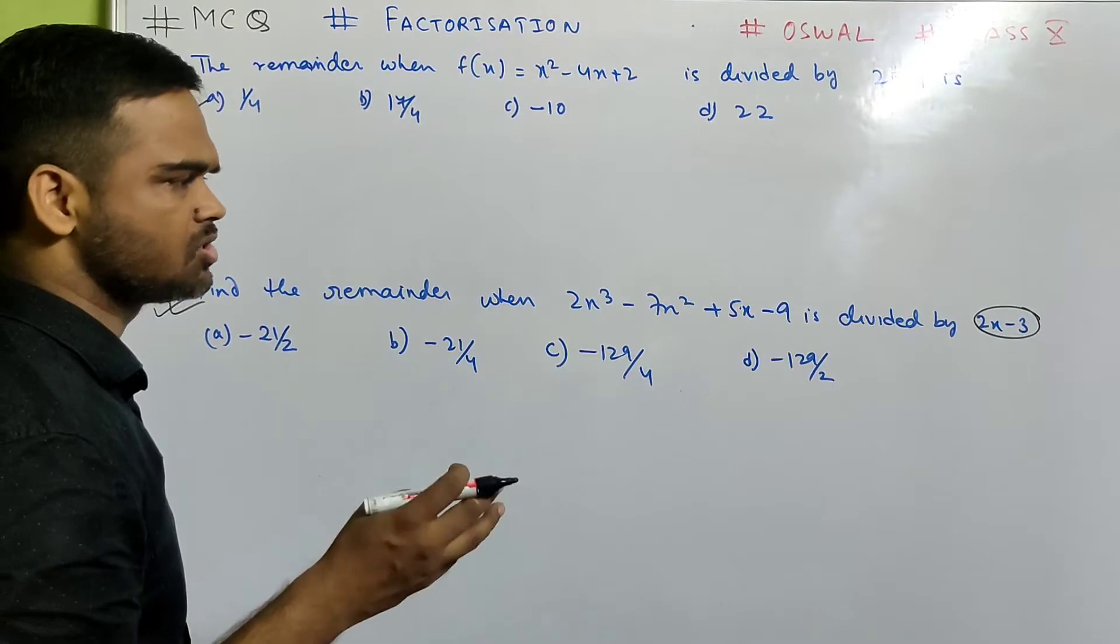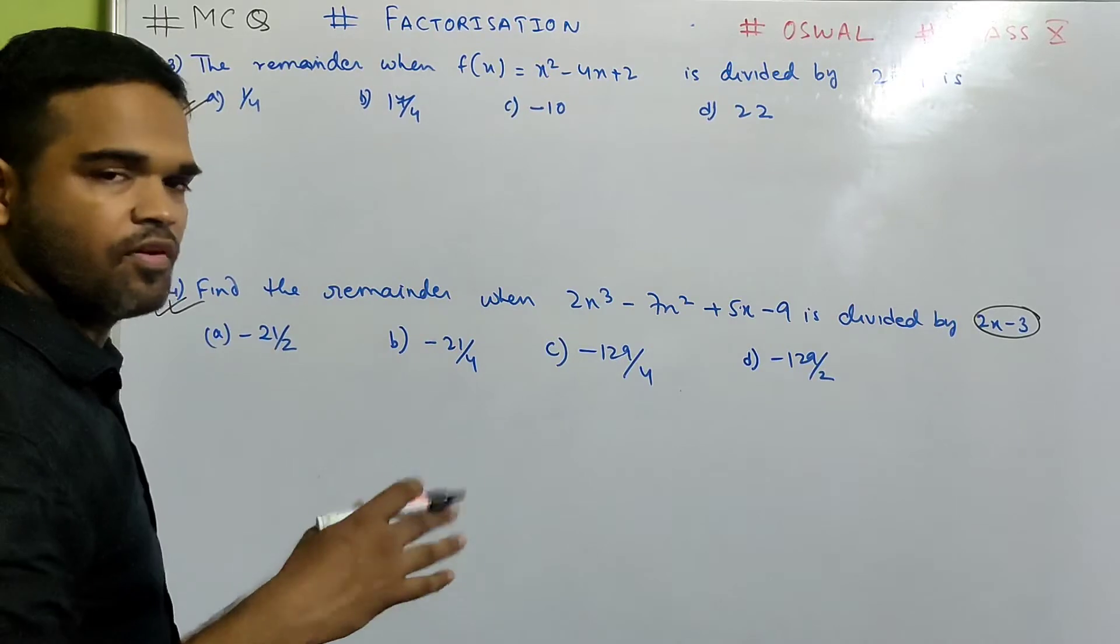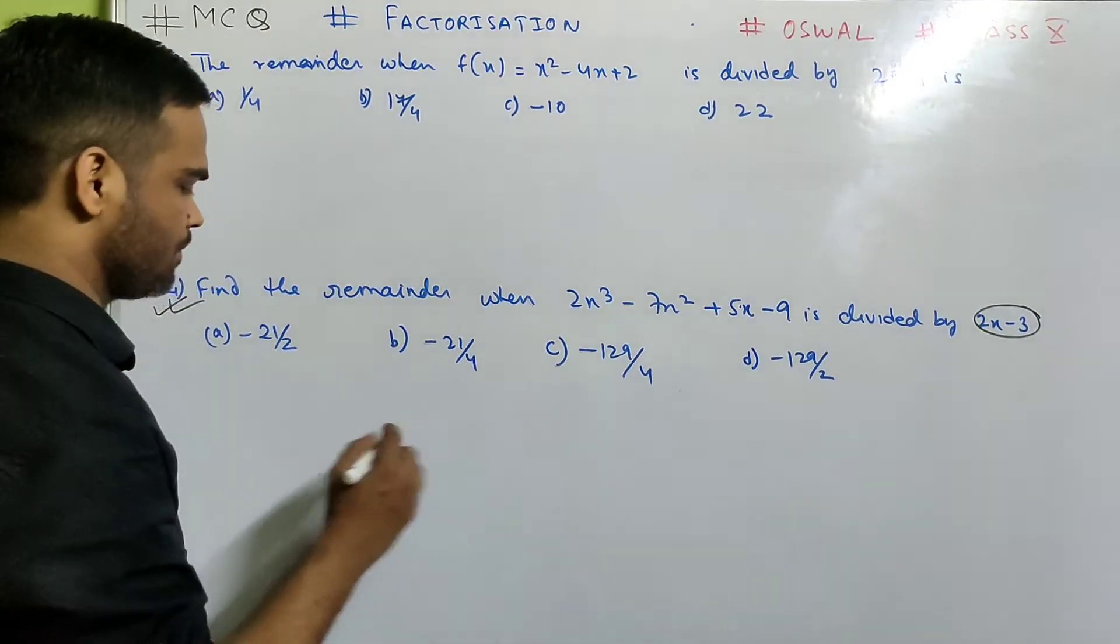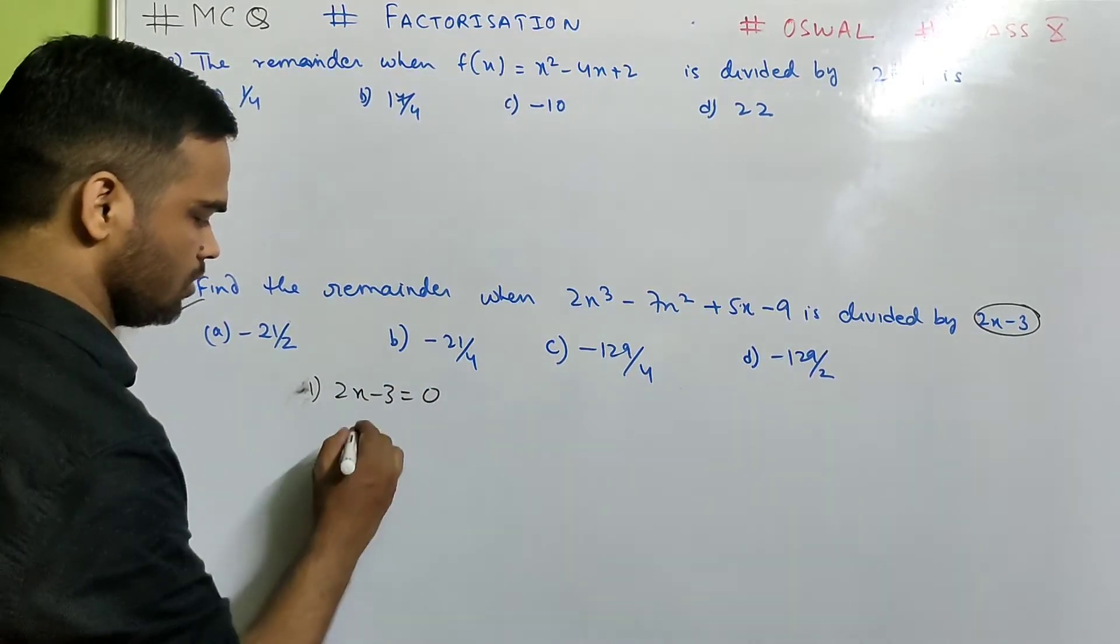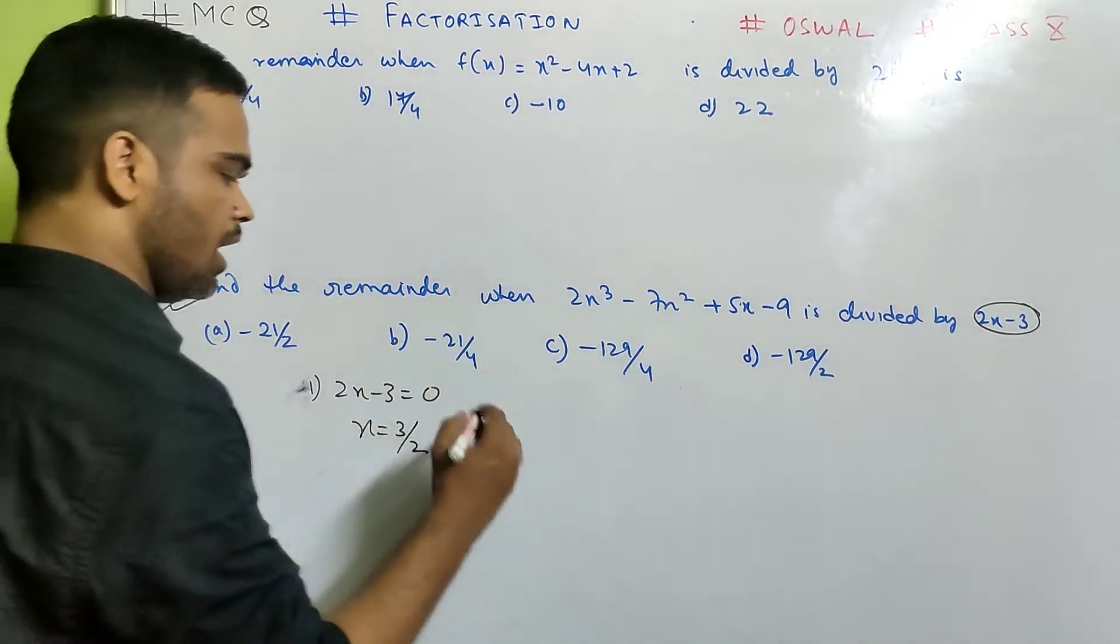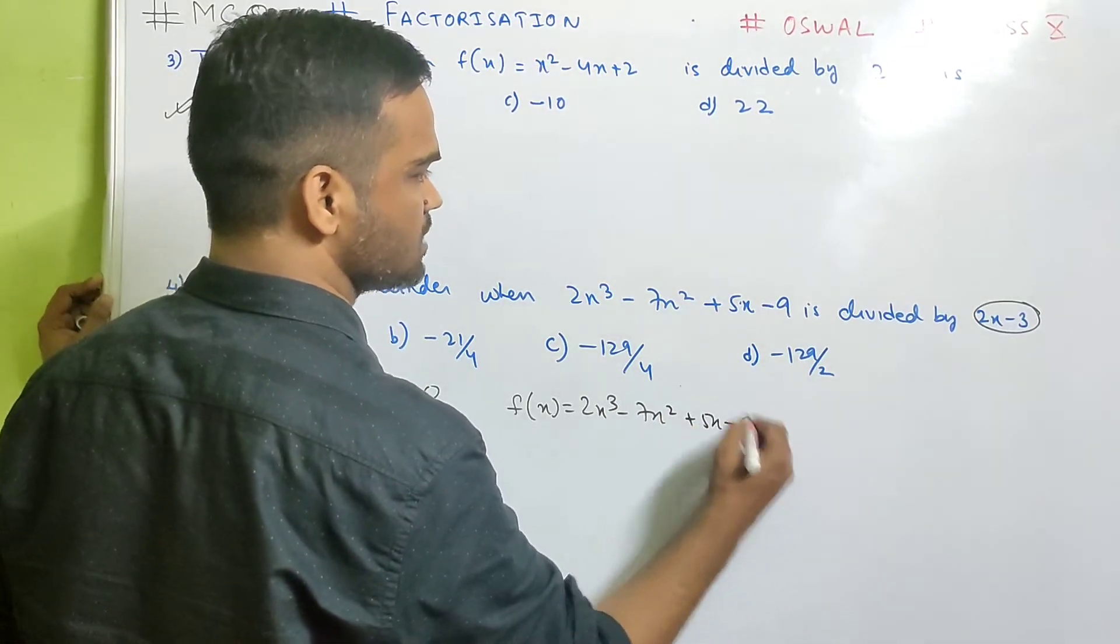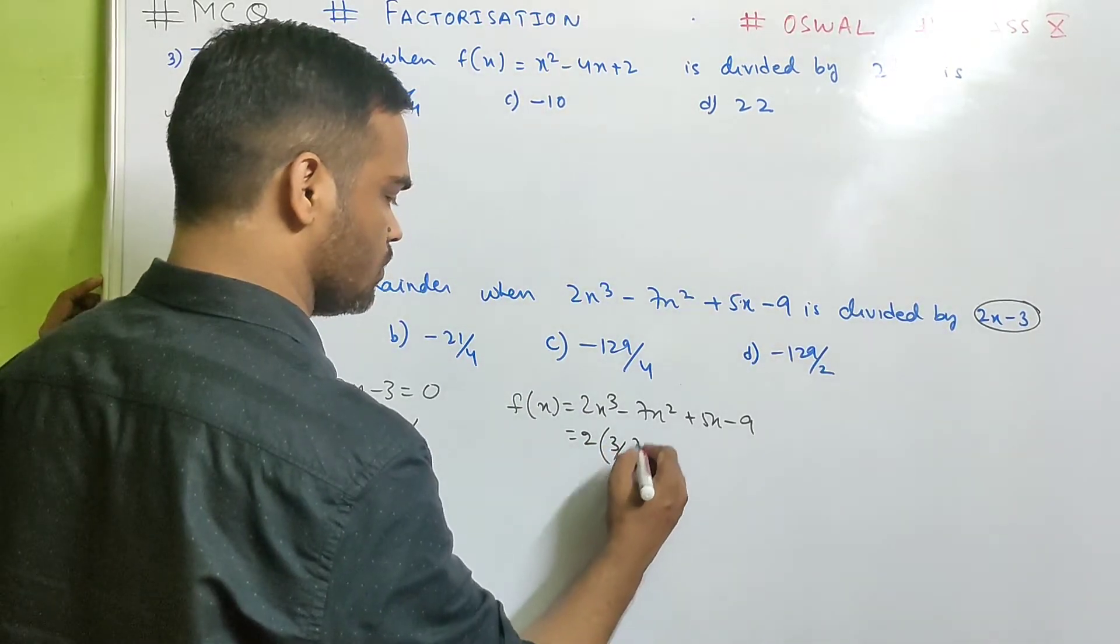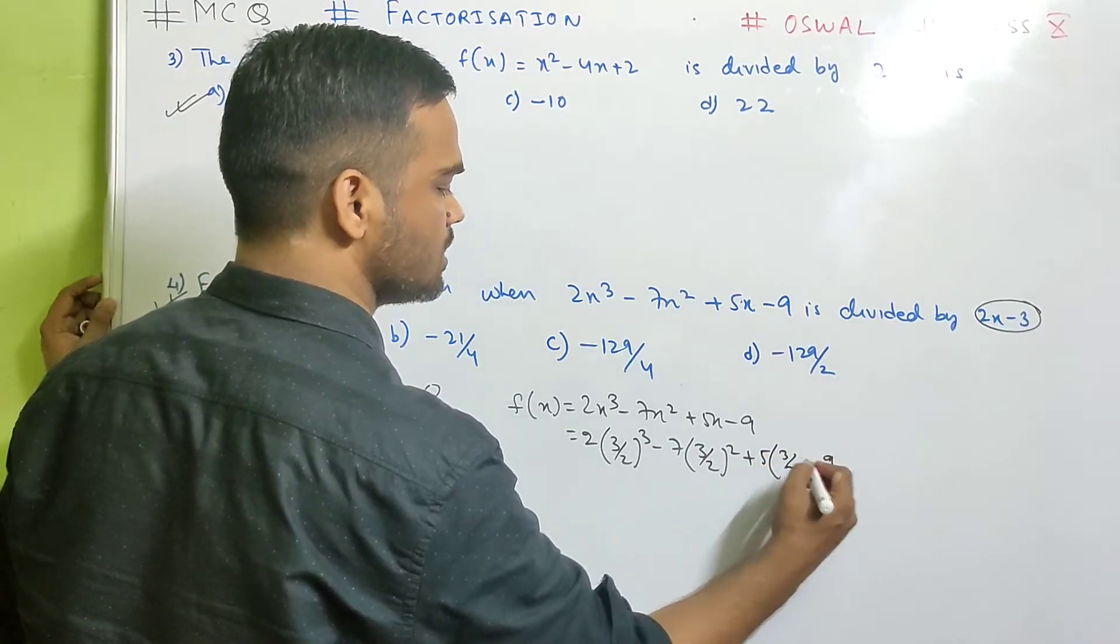Now let us know that x is a fraction. Because at times I see that kids, when they find the value of f of x, instead of x, they substitute a fraction. They do small, small errors. Let us see. In the first step, what do we need to? We need to equate the divisor with 0. So x is what? This goes over there. 3 by 2. Now your f(x) is what? 2x cube minus 7x square plus 5x minus 9. Substitute the value. So 2 times 3 by 2 whole cube minus 7 times 3 by 2 whole square plus 5 into 3 by 2 minus 9. Done.